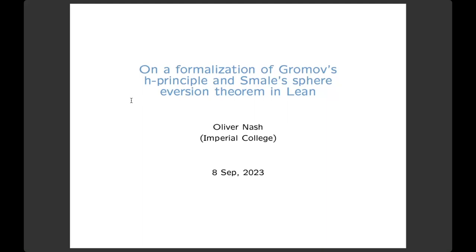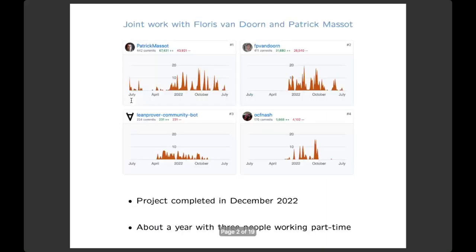Patrick had this vision of formalizing what's called the H-principle, which is a deep result due to Gromov in differential topology, from which the sphere eversion then follows very easily. This is all his vision. I'm not going to tell you what I mean by some of these things. I had great fun working on this project. There were moments of frustration, but it was great fun. It was a collaborative project with actually many people — the three main players were Floris, Patrick, and me.